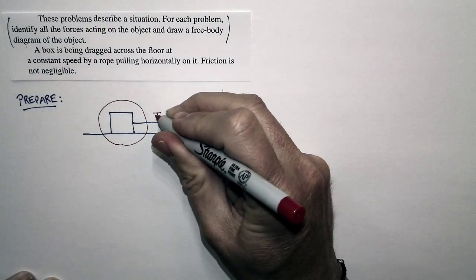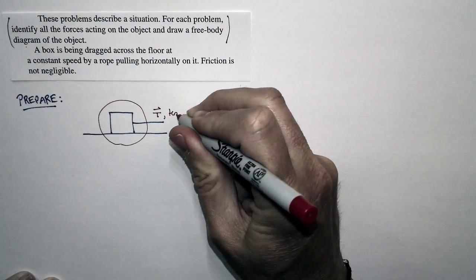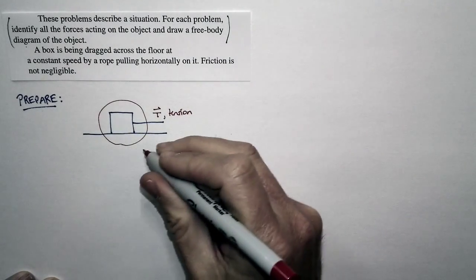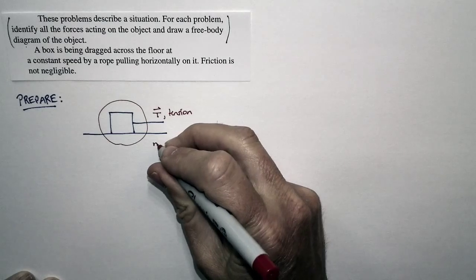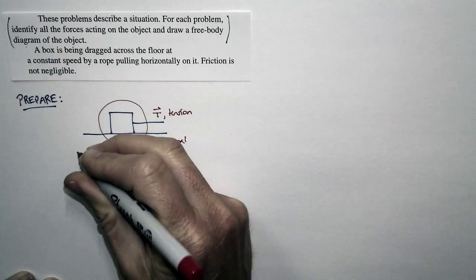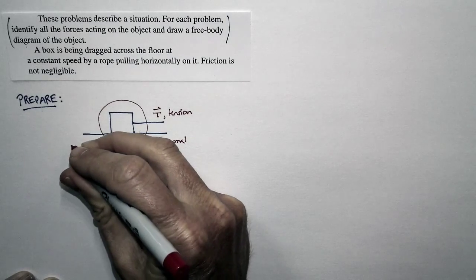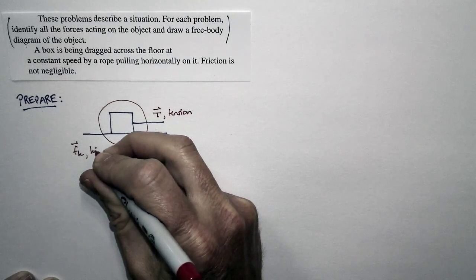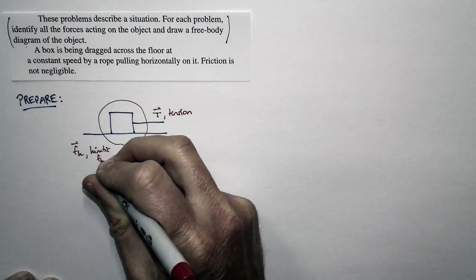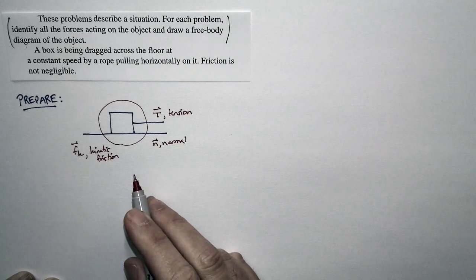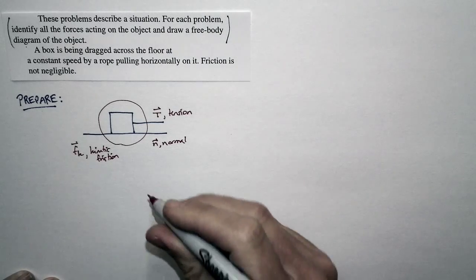Well, where the rope touches the box, it's going to exert a tension force. We know that that's true. Where the floor touches the box, there's two different types of forces we can have. There's a normal force, and there's also a friction force, and the box is sliding, so it's going to be a force of kinetic friction. So those are our forces. And those are our only contact forces because it's only the rope and the floor that touch the box.